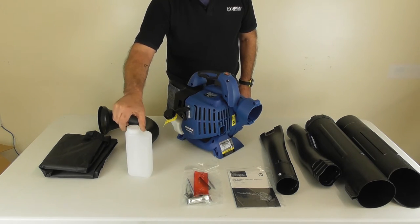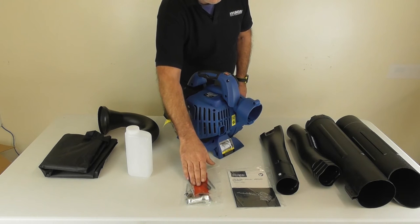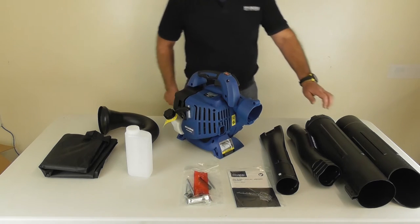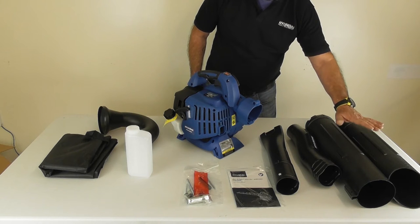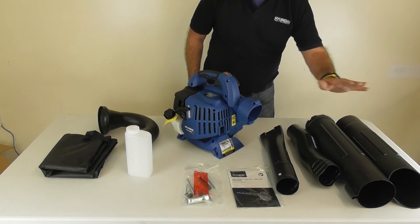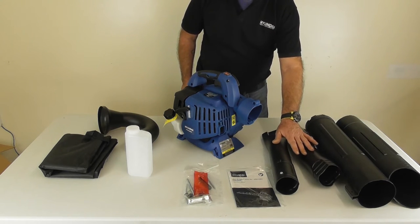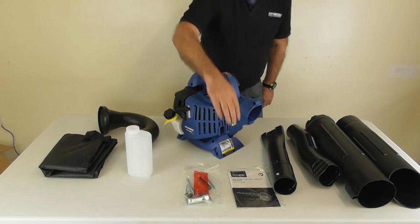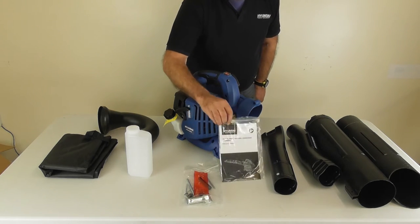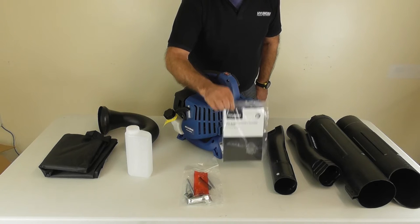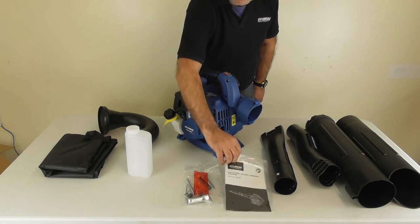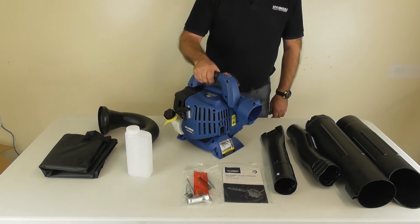The two-stroke oil to fuel mixing bottle, the toolkit which we'll be using some of the tools. The two larger tubes for the leaf collection function and the blower tubes are the two thinner tubes. Finally we have the user's manual, which I do recommend you read thoroughly before use.